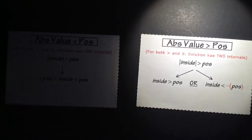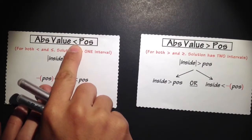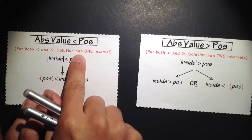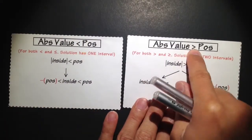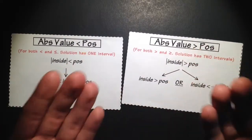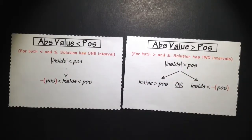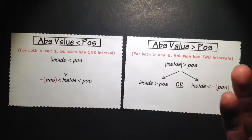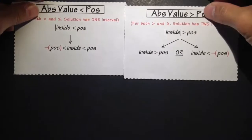One way to remember how many intervals you will have: think about less than as having less intervals — the solution should just have one interval. Compared to greater than, you have more intervals — you are expecting two intervals, which is more than one. But this is just the procedure; I will also have another video explaining why this works. For now I just want to show you the procedures and how to work out some of these problems.